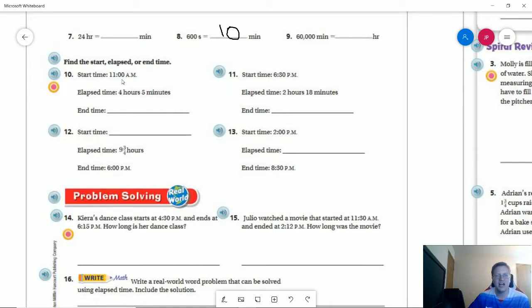So start time of 11 AM, we go forward from there four hours and five minutes. That takes us to noon, one, two, three PM and five minutes. So it'd be 3:05 PM.